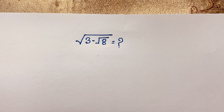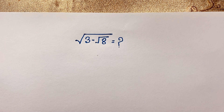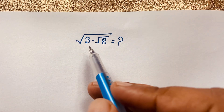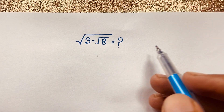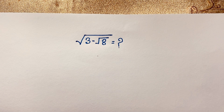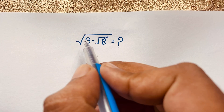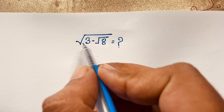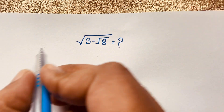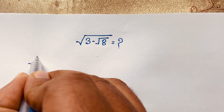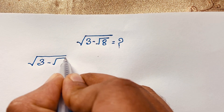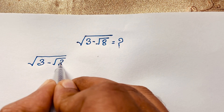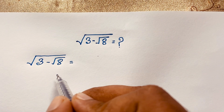Hello everyone, welcome to Rascal's Classroom. Today we are solving a radical math question: square root of 3 minus square root of 8 equals what? How to solve this interesting math question — how to simplify this expression. Our question is square root of (3 minus square root of 8).